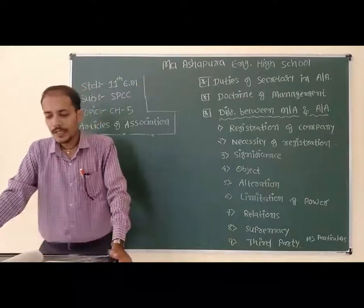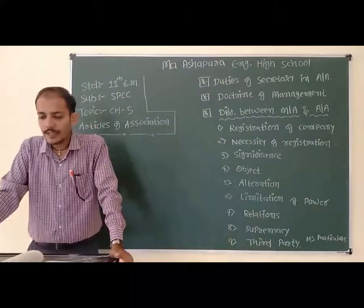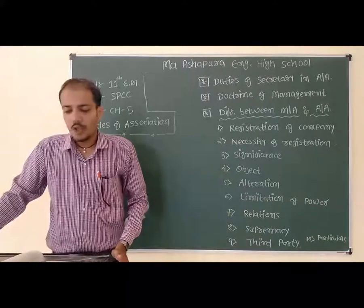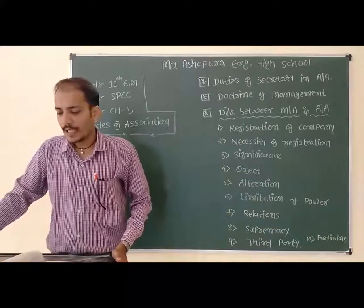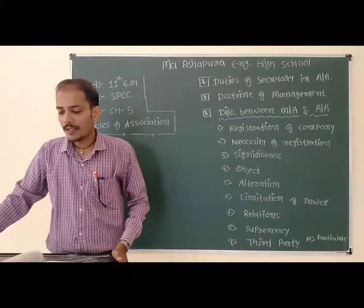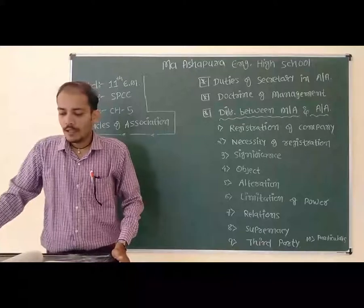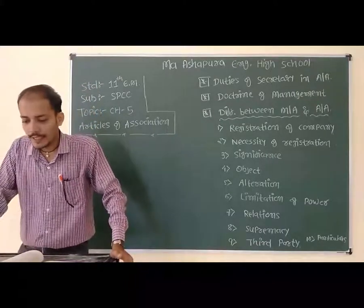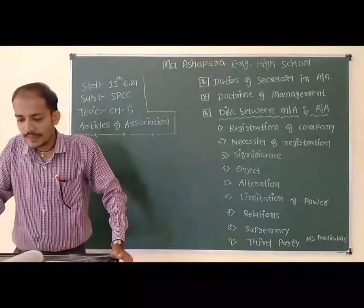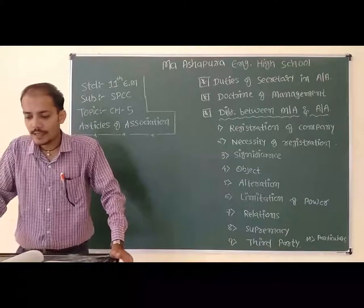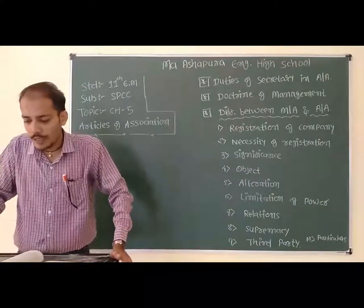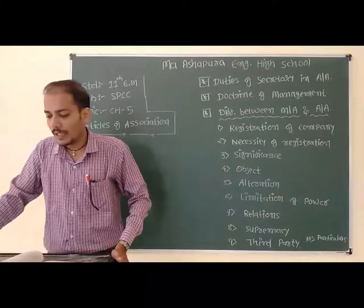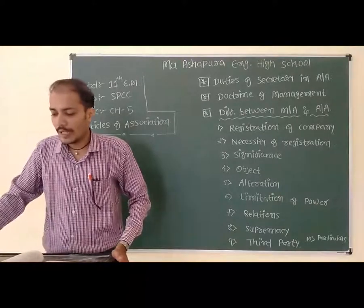Point number 10: Particulars. Memorandum of Association includes 6 clauses: Name clause, Registered Office clause, Object clause, Capital clause, Liabilities clause, and Subscription clause. Articles of Association includes share capital, share transfer, forfeiture, board of directors, administration, accounts, voting rights, etc.